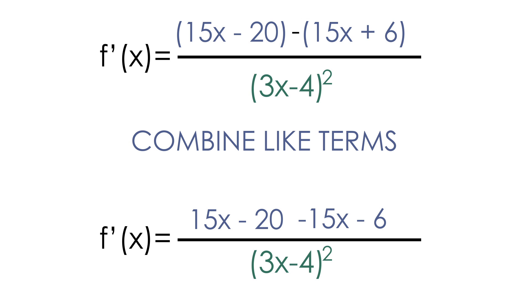Alright, so now the only thing we have left to do is combine all of our like terms. The 15x and the negative 15x are like terms, but they'll just cancel each other out. And the negative 20 and negative 6 are also like terms. Negative 20 plus negative 6 will give us a negative 26. And our solution to our problem, f prime of x, is equal to negative 26 all over 3x minus 4 squared.